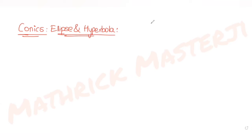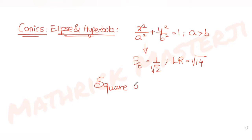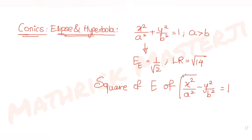The equation of the ellipse given is x²/a² + y²/b² = 1, with the condition that a > b. The eccentricity of the ellipse is 1/√2 and the length of the latus rectum is √14. The question asks us to find the square of the eccentricity of the hyperbola x²/a² - y²/b² = 1.